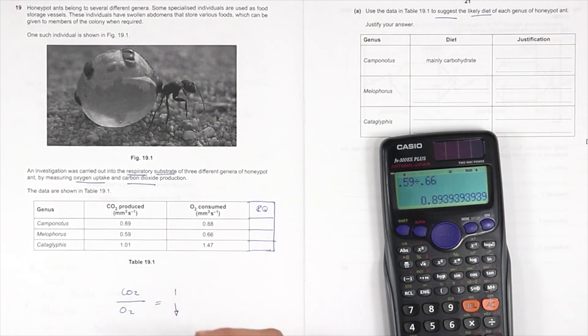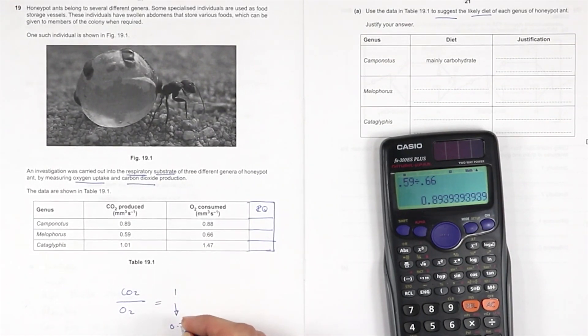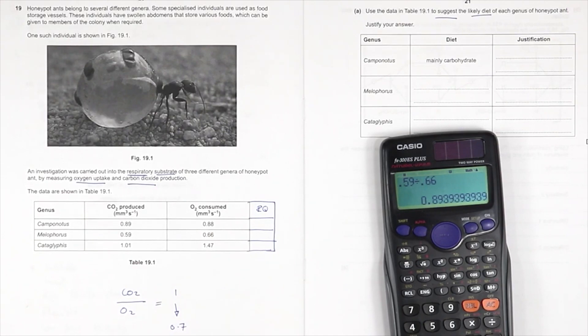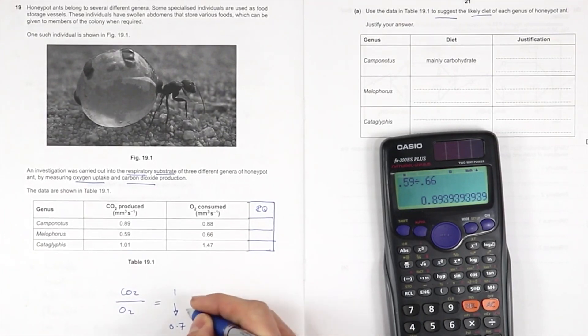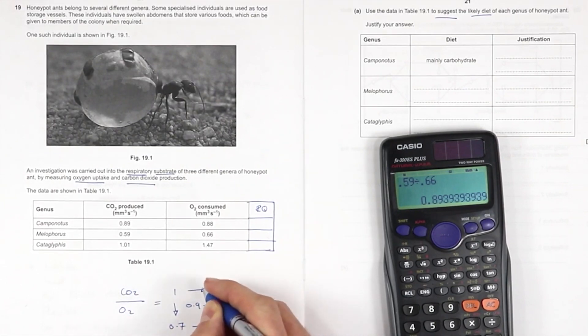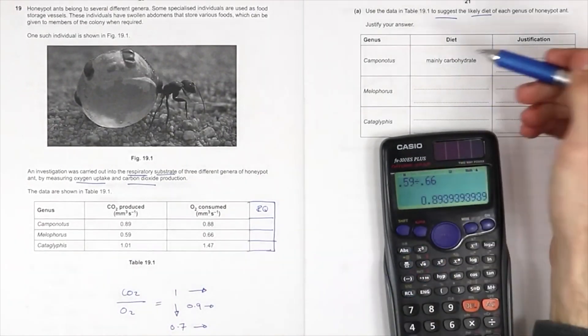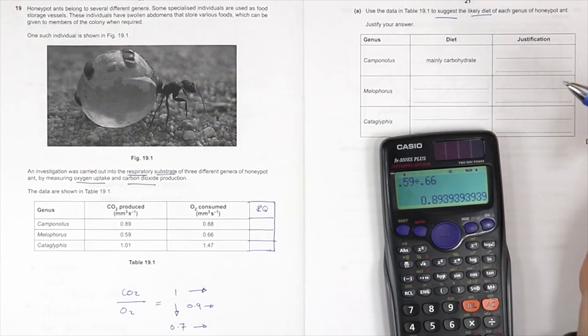And it's going to decrease to something or other. 0.7 is the lowest you need to know about. And these are going to equate, different decimals are going to equate to different things. So one, I will give you the answer, is carbohydrates.